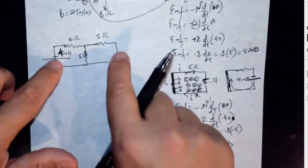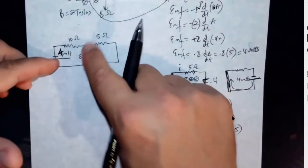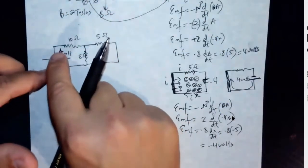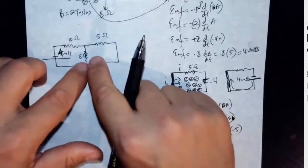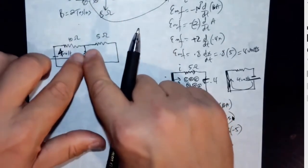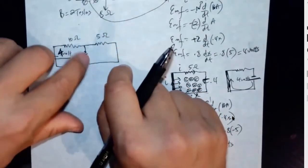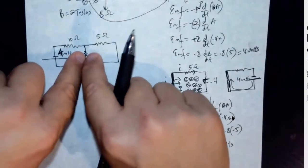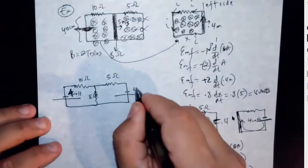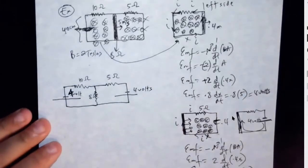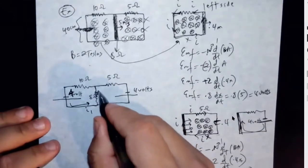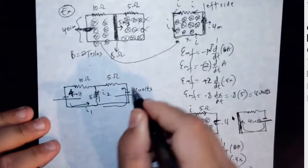So the two batteries are looking at each other — one wants to get the current to be clockwise and this one wants to get the current to be counterclockwise. Actually, the currents are going to add up. They're going to come like this and add up. So counterclockwise on the left side and clockwise on the right side — the currents in the sliding rod actually add up. So you have here another circuit with 4 volts.